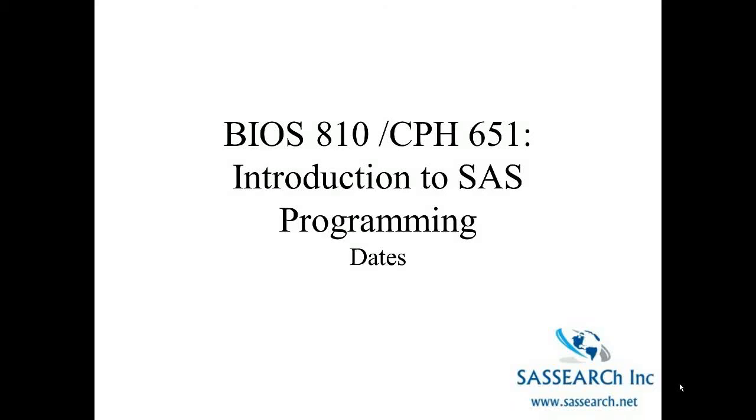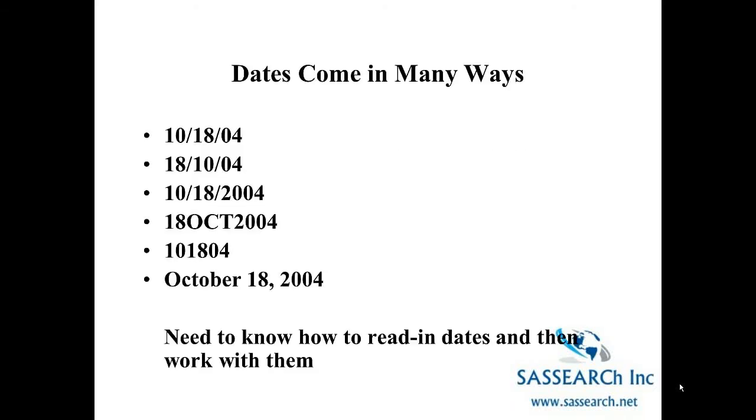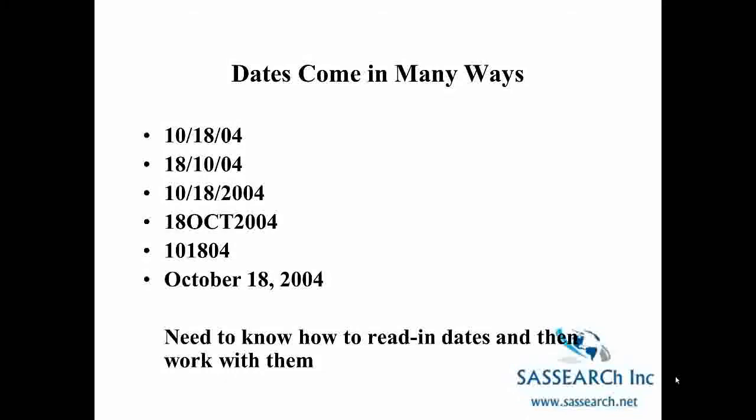This video introduces how SAS deals with dates. Dates come in many formats. Here we're looking at the date October 18, 2004, and I'm showing examples of all the different ways that date can be written. In our first example we have 10/18/04, in another example we see 10/18/2004, and in the last example it is written out as October 18, 2004. So we need to know how to read in these dates as they show up in these particular formats.